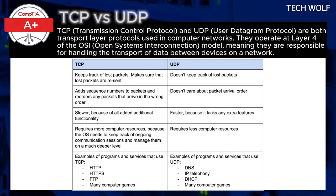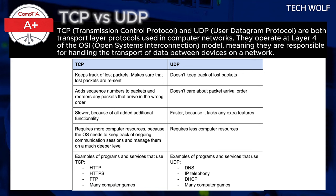Flow control and congestion control: TCP uses mechanisms to avoid overwhelming the network or the receiving device. It adjusts the rate at which data is sent depending on how fast the receiver can handle it. Because of these features, TCP is reliable, but it comes at a cost — it is slower compared to UDP. The protocol has to wait for acknowledgements and ensures that all data is correctly received, handling retransmissions if necessary.